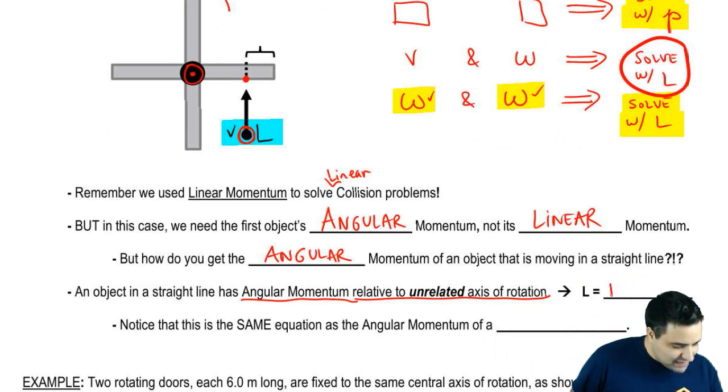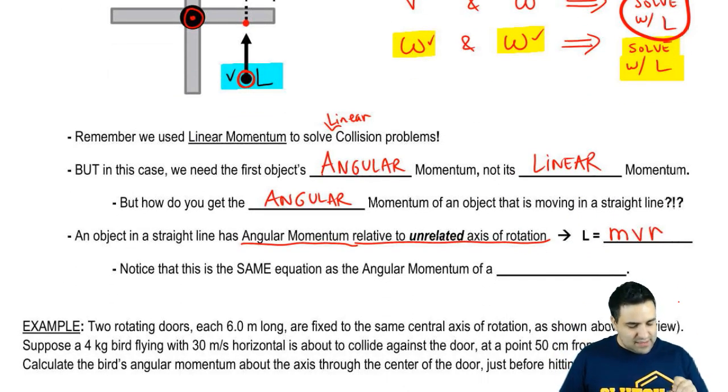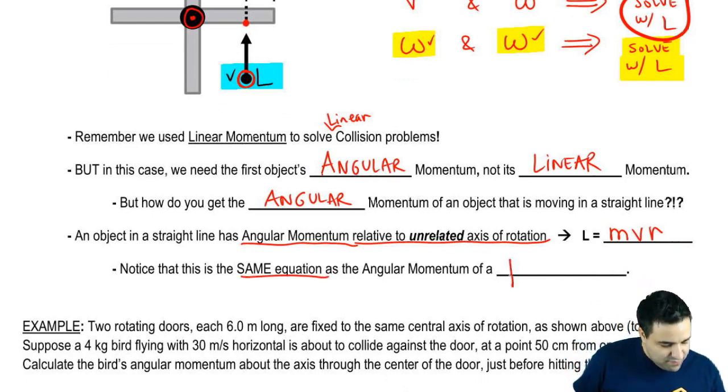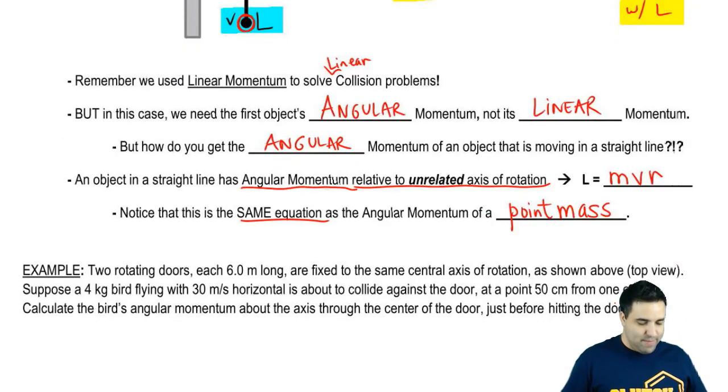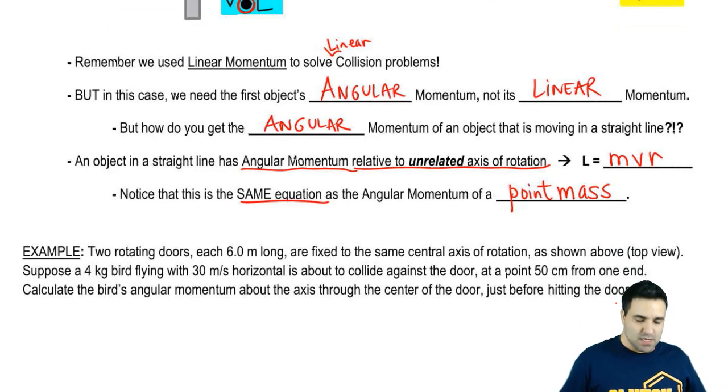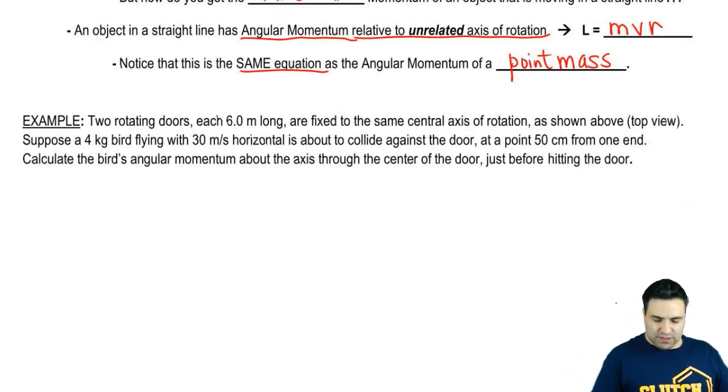And we use the equation L equals MVR. Notice that this is the same equation that we used for the angular momentum of a point mass. So let's do an example and see what the deal is here.